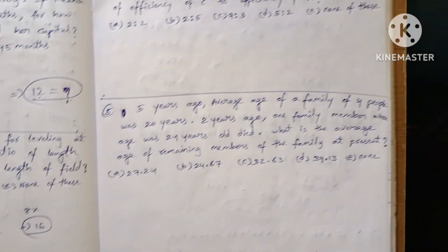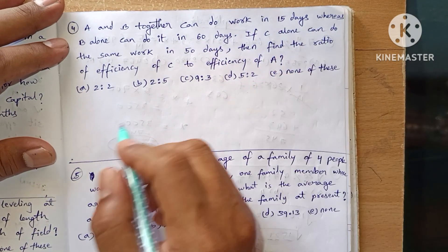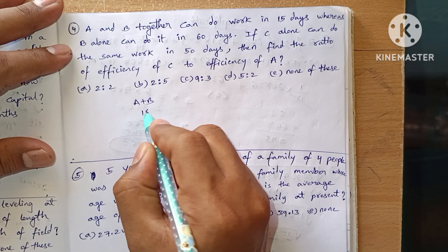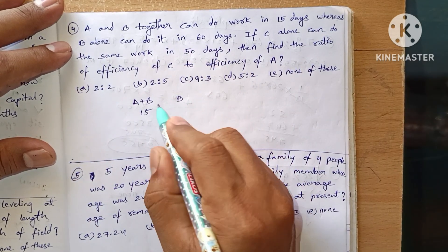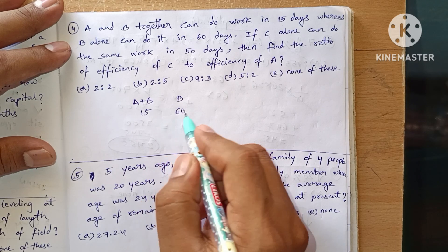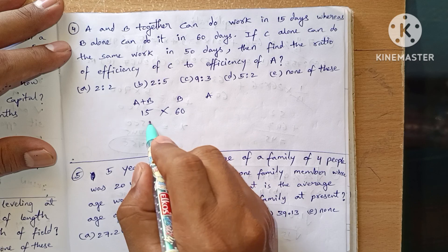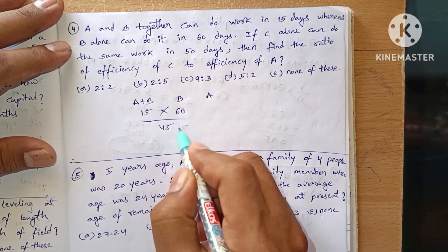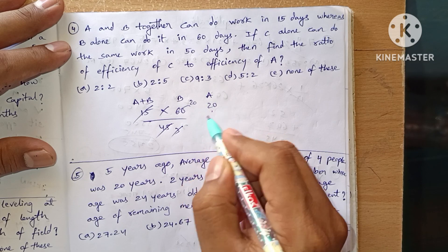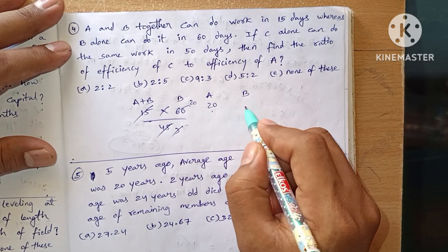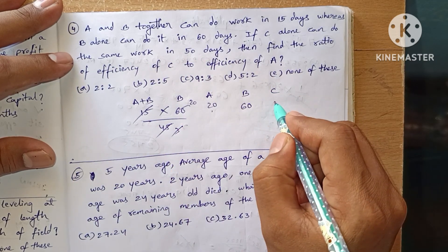Now moving to question number four. A and B together can do a work in 15 days, whereas B alone can do it in 60 days. So I can calculate A from here. The formula will be: multiply these and divide by their difference. 15 × 60 / 45 = 20. So A can do it in 20 days, B can do it in 60 days.